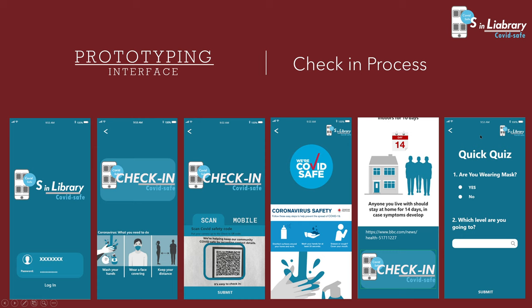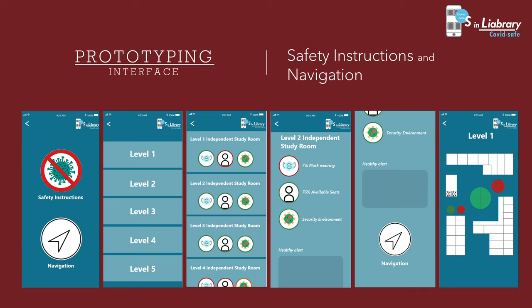About the second task, space navigation: users can click on the safety illustration button to visualize the number of users in different areas, the percentage of mask wearing, and whether the system analyzes a safe environment. Clicking will give a specific return and health alert. At the bottom of the page, there is also a navigation icon that shows users the usage of each facility on the floor.